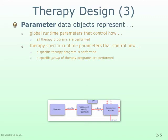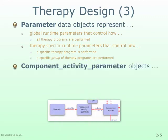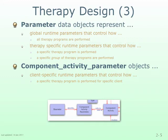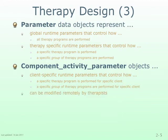Then there are the component activity parameter data objects which can be used as client-specific runtime parameters that control how a specific therapy program is performed for a specific stroke survivor, or how a specific group of therapy programs are performed for a specific stroke survivor. These can be modified remotely by therapists in order to modify a therapy schedule, adjust therapy targets, change the number of activity repetitions, or modify therapy program workflows.